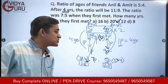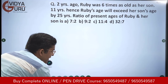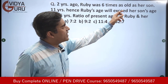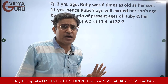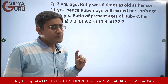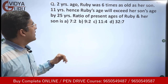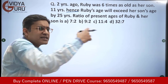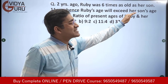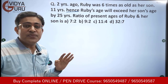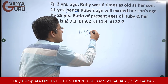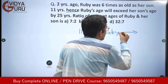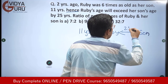Now the last question for today — a higher level question with one important concept. Two years ago, Ruby's age was six times the age of her son. Eleven years hence, Ruby's age will exceed her son's age by twenty-five years. We need to find their current ratio of ages.